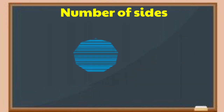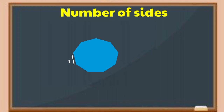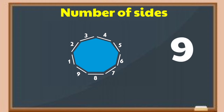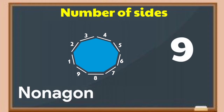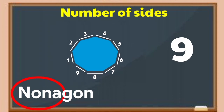Figure 7. Yes, it has 9 sides. The figure on screen is a nonagon. From the Latin word 'nona' meaning 9. A nonagon has 9 sides.